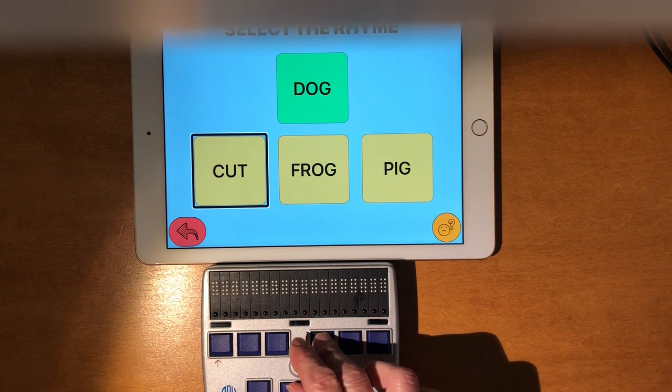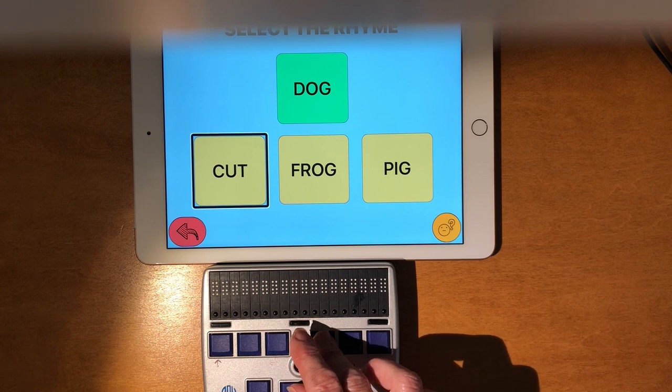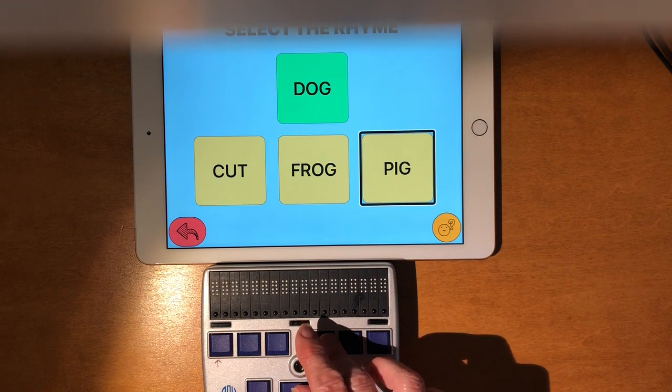So cut and it says button. Button means I can select it. I'm going to move over. That's the first one of the three in a row. And these are my three answer choices. Frog. Button. Pig. Button.